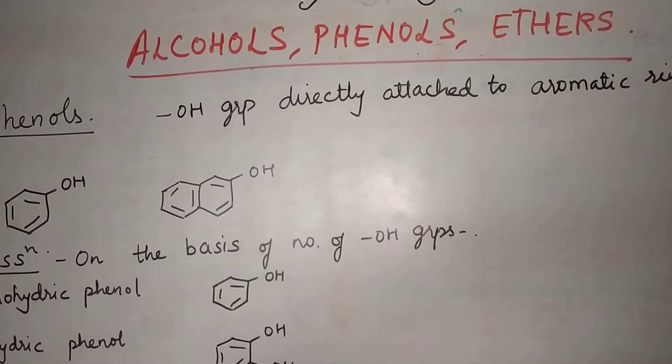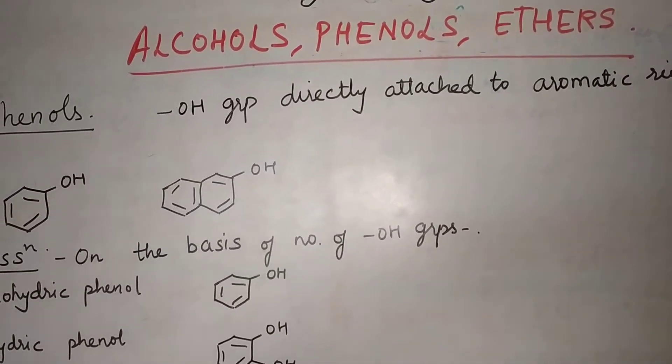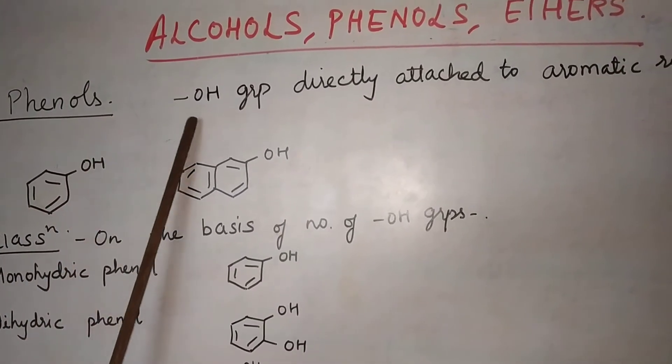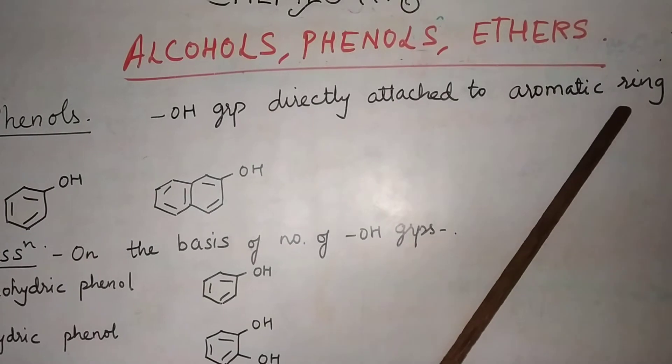Phenols are compounds which contain OH group. Alcohols also contain OH. Phenols also contain OH group. But in phenols the OH group is directly attached to the aromatic ring.